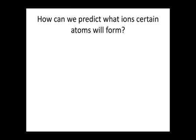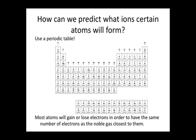But for single atoms, we can generally predict what sort of ions they will form. How can we do that? We can predict what ions certain atoms will form by using a periodic table. In general, most atoms will gain or lose electrons in order to have the same number of electrons as the noble gas closest to them.